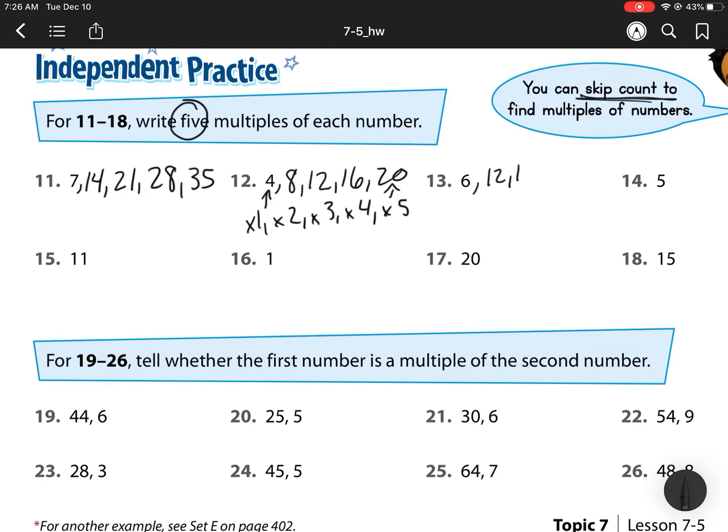6 is we have 6, 12, 18, 24, and 30. For 5, we go 5, 10, 15, 20, 25.